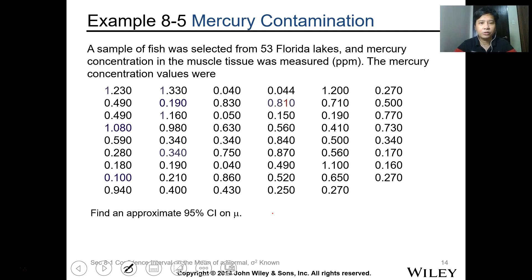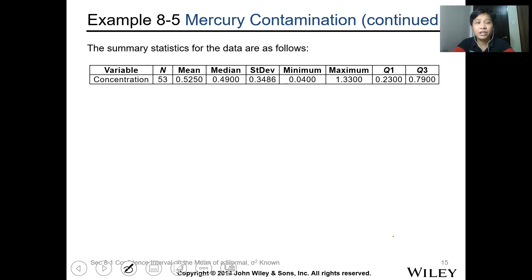Let's have this example. A sample fish was selected from 53 Florida lakes and mercury concentration in the muscle tissue of the fish was measured in ppm. The mercury concentration is listed here. Find an approximate 95% confidence interval. We need to get the x bar and s of our data. You can input that to your calculator or use excel to calculate this. From the summary table, we get the 53 samples, the mean value and the standard deviation.